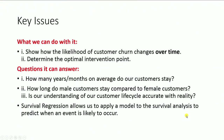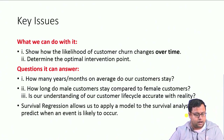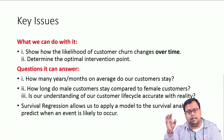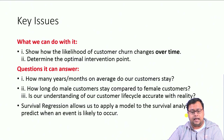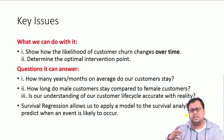What are the key issues? How does the likelihood of customer churn change over time, and what are the potential intervention points — at what point should you intervene? Questions it can answer: how many years or months on average does a customer stay? How long do male customers stay compared to female customers? Is there any difference between gender, nationality, or one customer group versus another? Is our understanding of the customer life cycle accurate with reality? Survival regression allows us to apply a model to predict when an event is likely to occur.